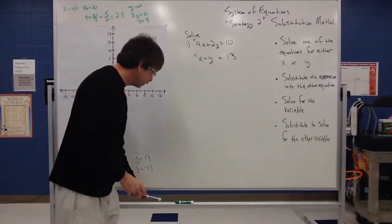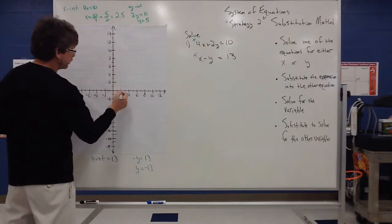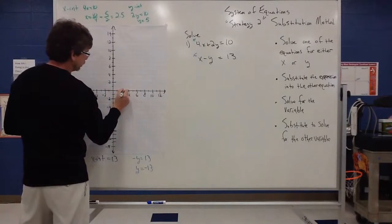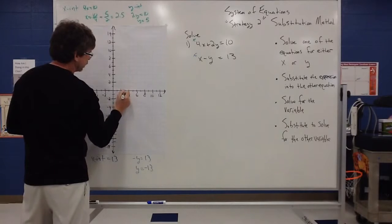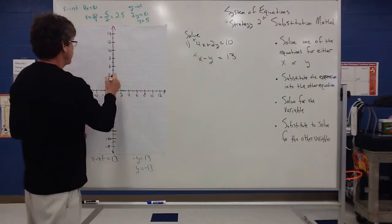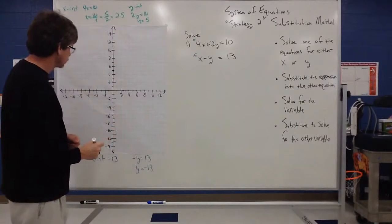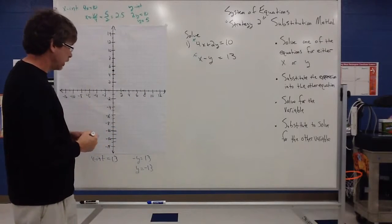So let's graph the first one. So I have, my x intercept is 2.5. So 2.5 would be located about there. y is equal to 5, so that's a little easier to do. I can now draw that line.